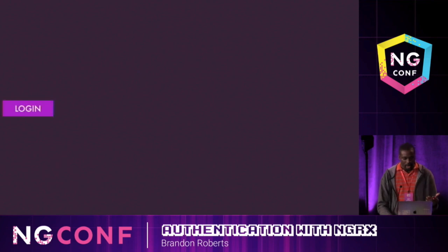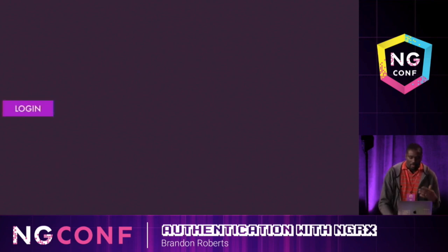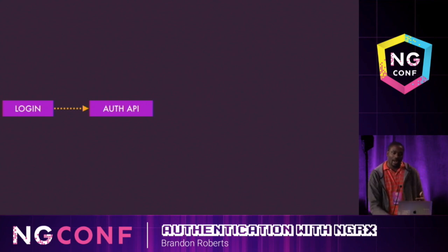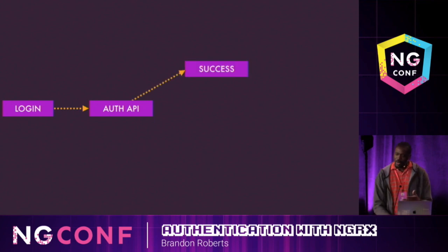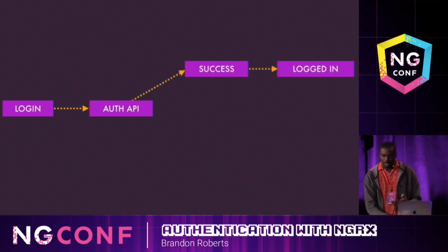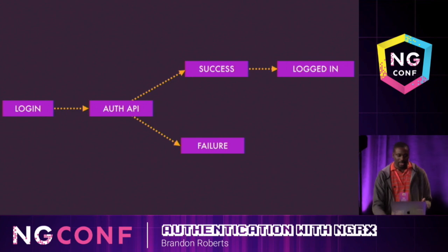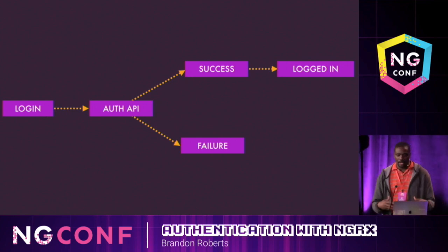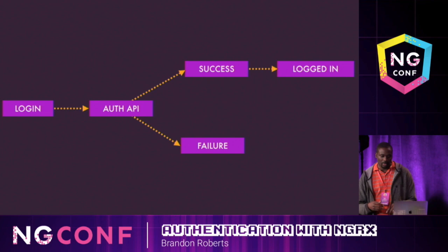Actions determine flow for UI events. Writing these actions up front allows you to map out entire user flows before even writing reducers or effects, helping you get a shared understanding of how these events are going to be handled.